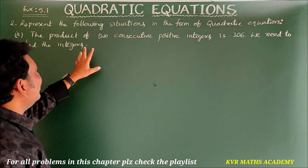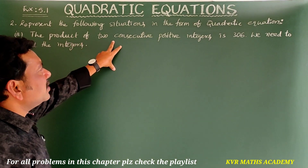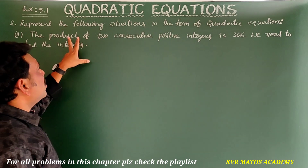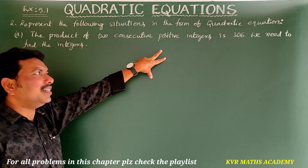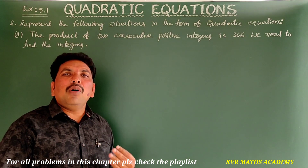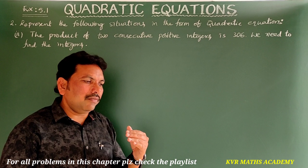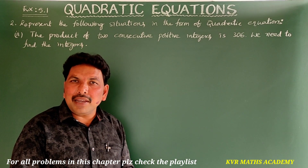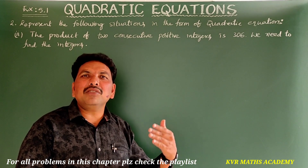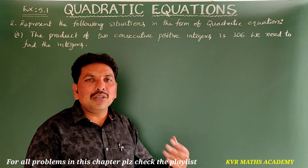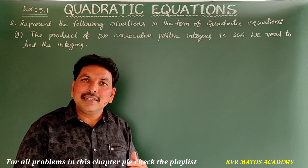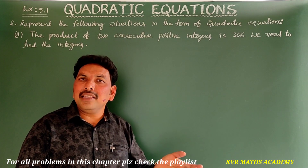In the second situation: the product of two consecutive positive integers is 306. We need to find the integers. For consecutive integers, if one integer is 2 the next is 3, then 4, then 5, and so on. So if the smaller positive integer is x, the next consecutive integer is x + 1.